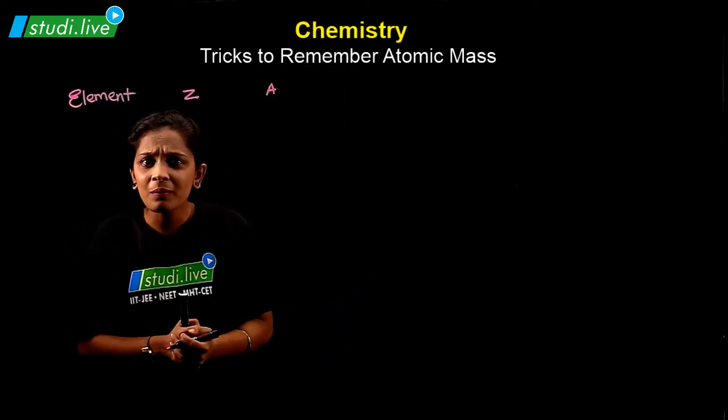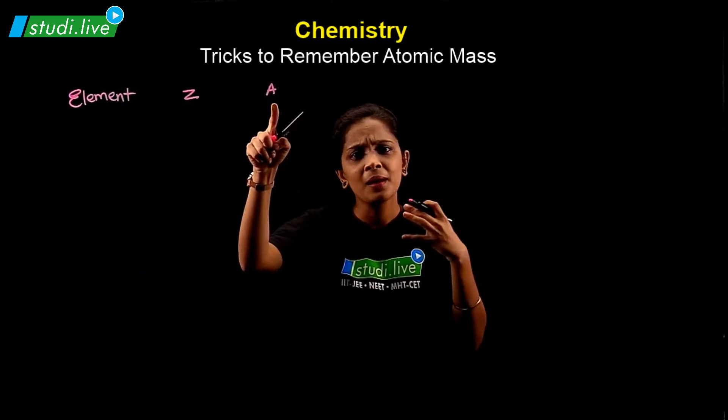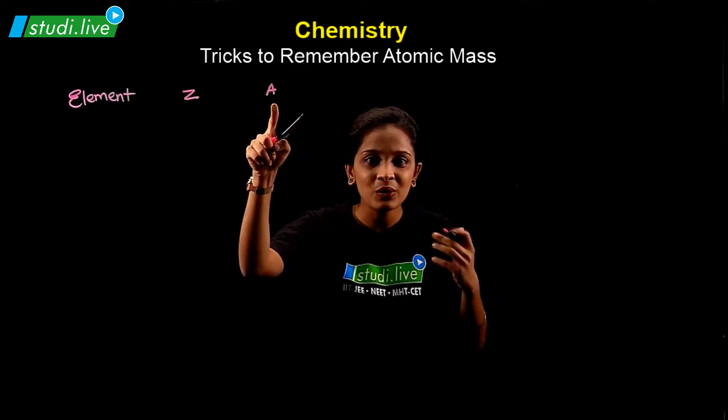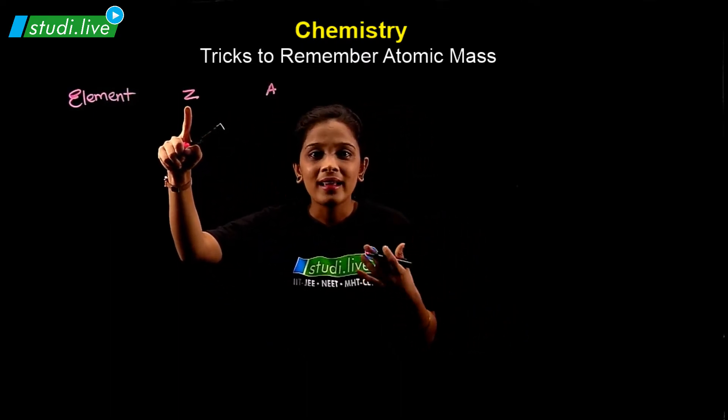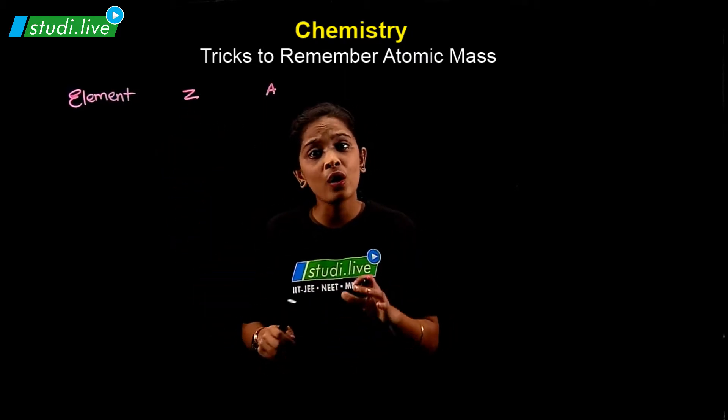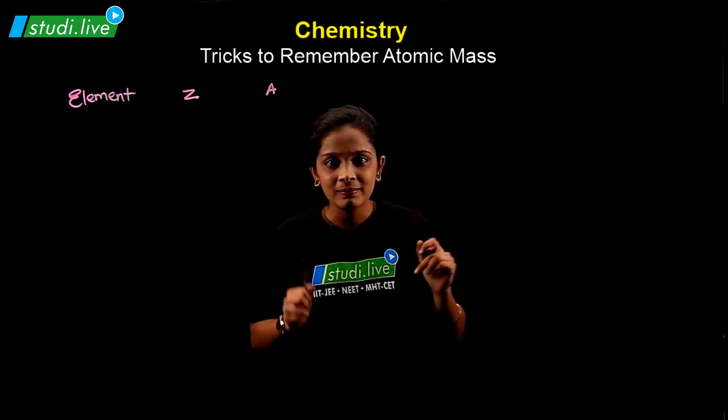What is atomic mass, by the way? Atomic mass means number of protons plus number of neutrons. Z, atomic number, which equals the number of protons or number of electrons in the neutral atom.